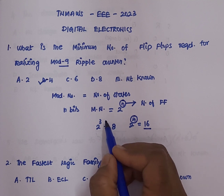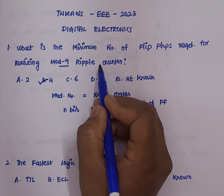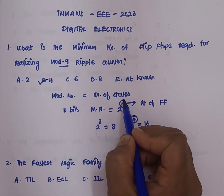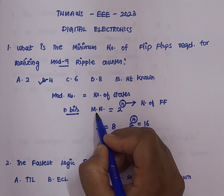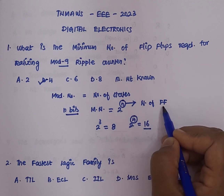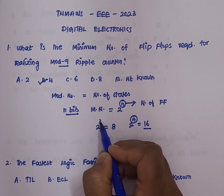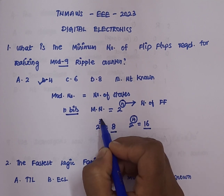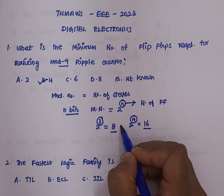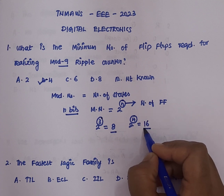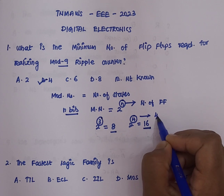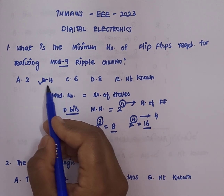To summarize: the minimum number of flip-flops needed is found using 2 power n. For mod 9, since 2 power 3 gives 8 which is less than 9, we move to 2 power 4 which gives 16. So the minimum number of flip-flops required is 4, which corresponds to option B — the correct answer.